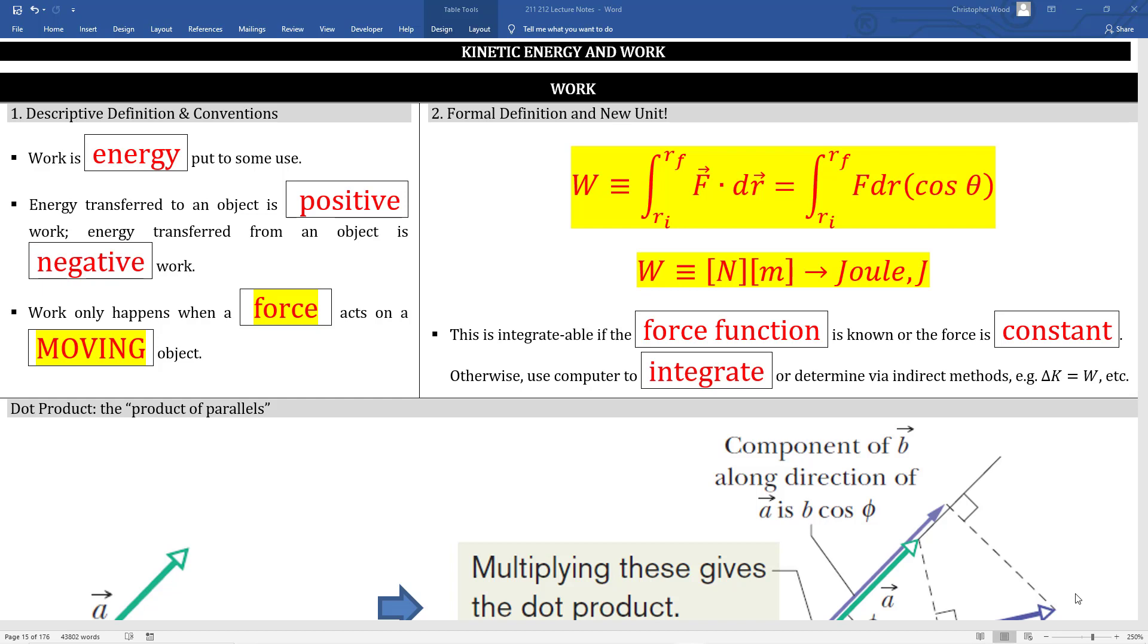We'll spend a lot of time on the dot product, but right now you can start thinking of the dot product as the product of parallels. The dot product addresses the parallelness between two vectors. The cosine term captures this parallel component. You see the introduction of a brand new unit. If work is force times distance, force is newtons, distance is meters, so a newton meter is what we call a joule.